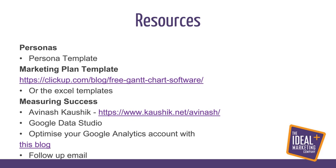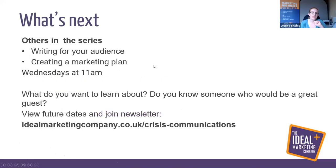You don't want clients chasing you for updates feeling uncertain about progress. Resources available include: a persona template to download, a marketing plan template with a free Gantt chart, and Avinash Kaushik's resources on measuring success. Google Data Studio is a nice way to create charts that bring in data and make it easier to decipher. If you're reporting regularly, optimize your Google Analytics account — I'll link to a blog about that and send everything in a follow-up email.